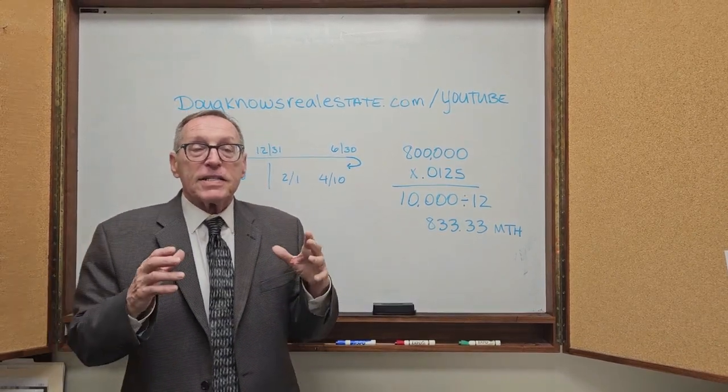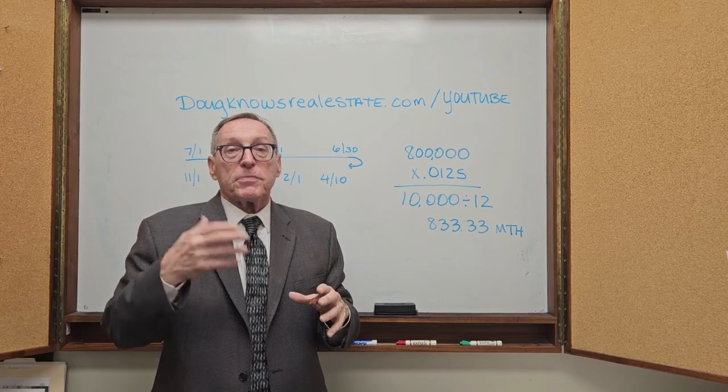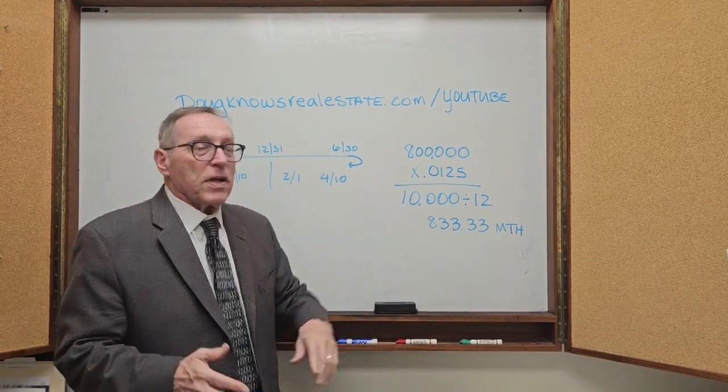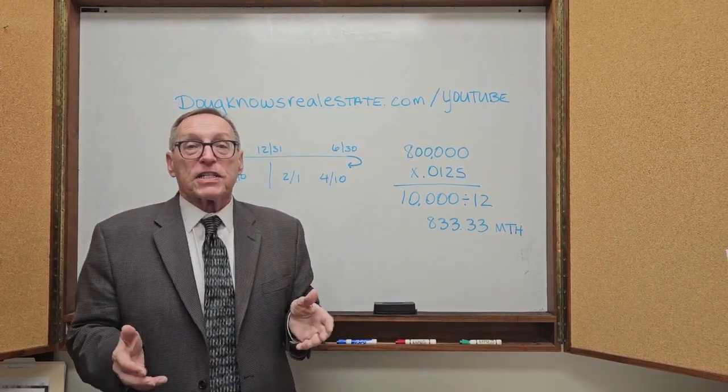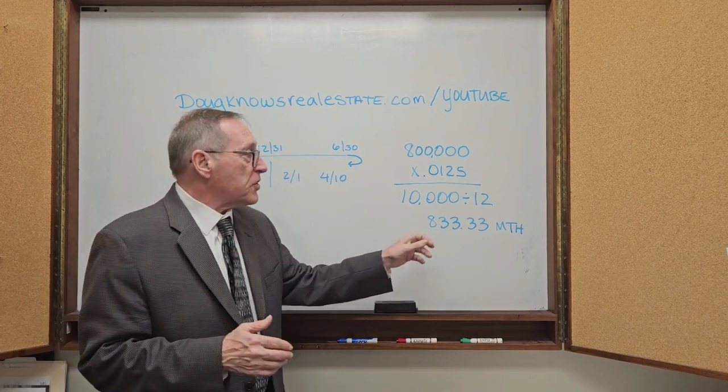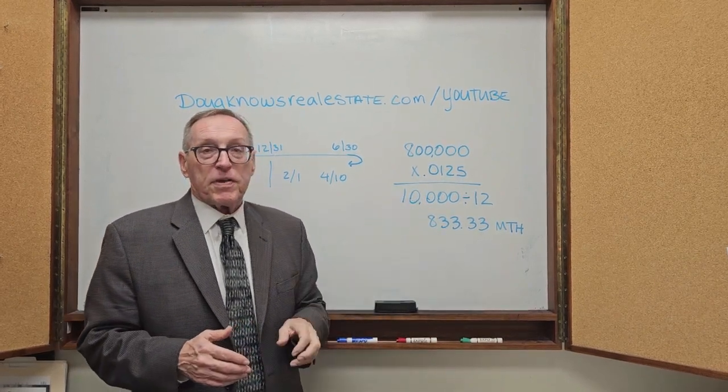If they're paid in six month increments, if you want to pay them yourself, then you're going to pay like $4,900 every six months. Otherwise, you're going to pay this with your mortgage payment every month.